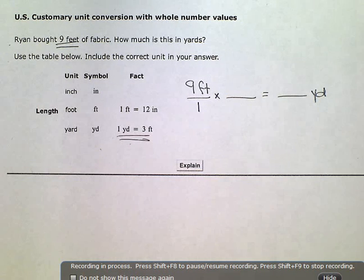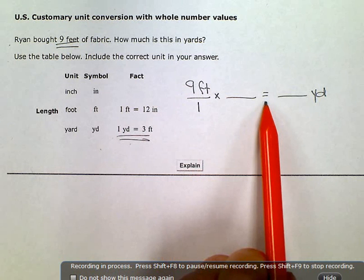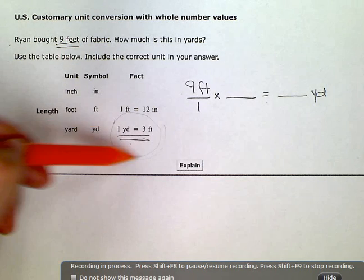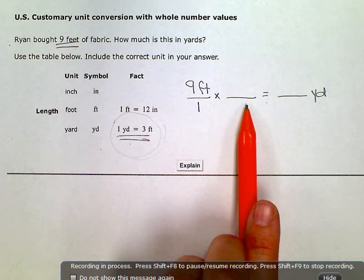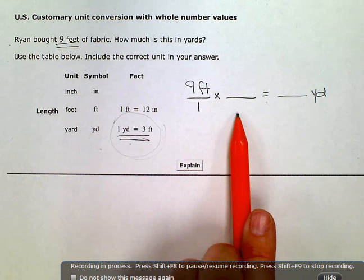I have nine feet right now. I want to change that to yards. So these two numbers I need to fill in as the conversion ratio right here. I just have to decide which one goes in the numerator and which one goes in the denominator.